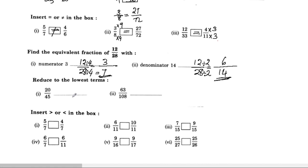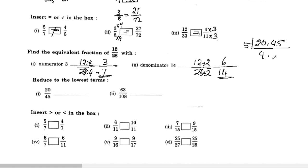Reduce to the lowest terms. 20 by 45: we find a common factor. 5 is a common factor — 5 times 4 is 20, and 5 times 9 is 45. Dividing: 20 divided by 5 is 4, and 45 divided by 5 is 9. So 20 by 45 in lowest terms is 4 by 9.